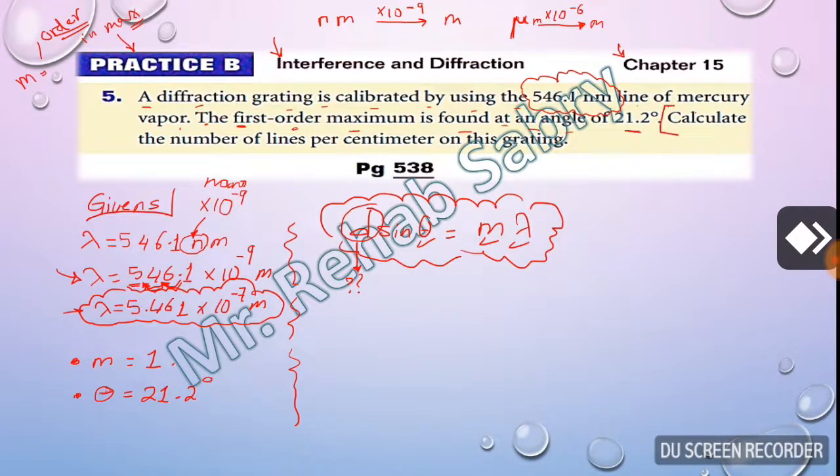Let's read what's required. Calculate the number of lines per centimeter, not per meter. So he is asking about the number of lines per centimeter and this is required.